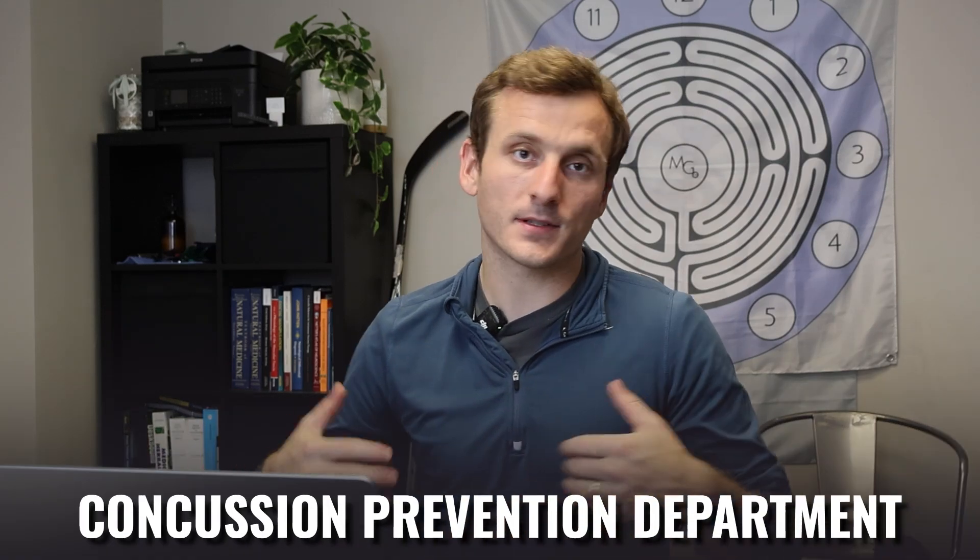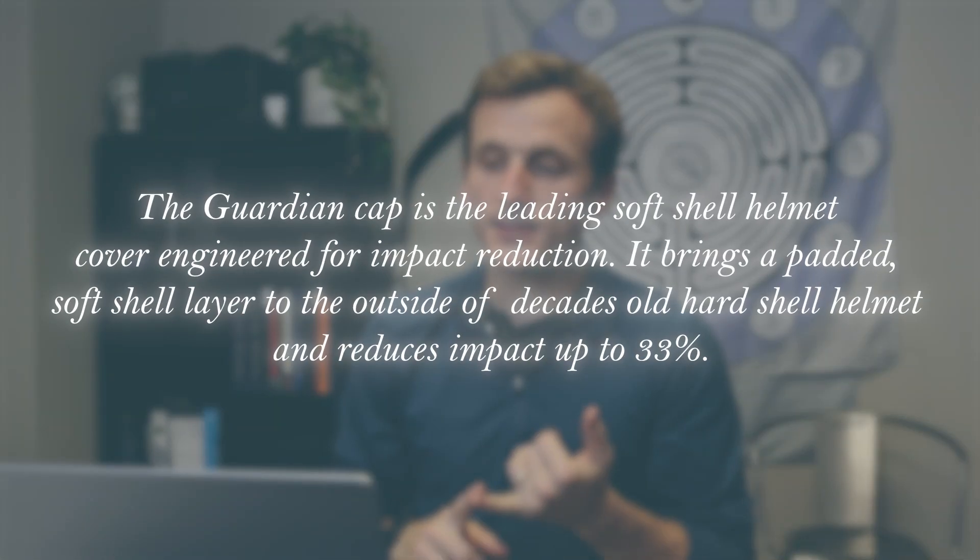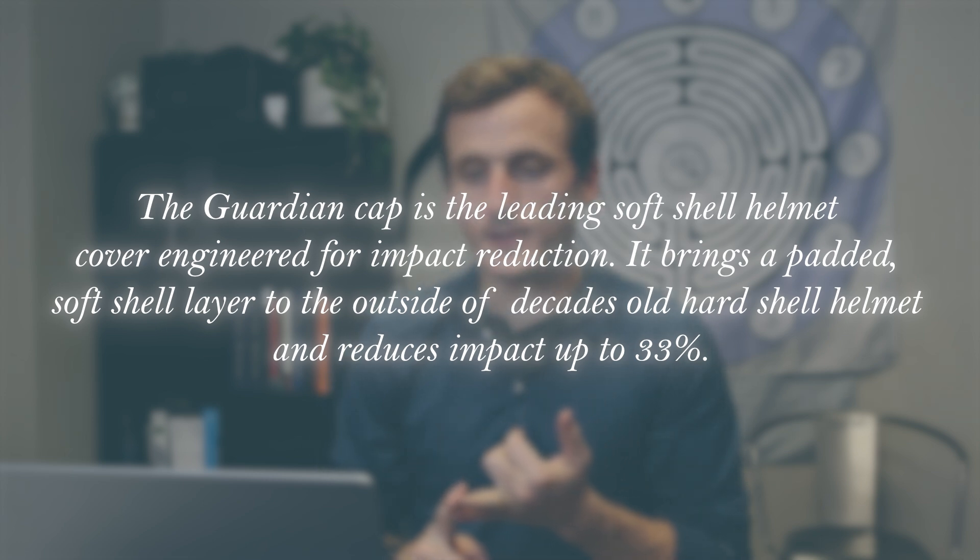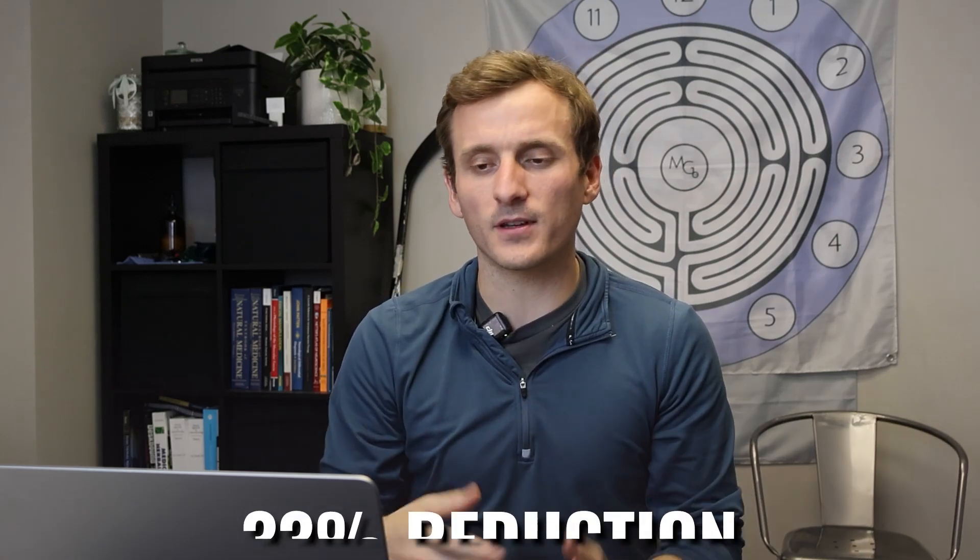So, with that, we know that helmets could obviously use some work in the concussion prevention department. Enter guardian caps. These were created in 2020, and from their website, they say, quote, the guardian cap is the leading soft shell helmet cover engineered for impact reduction. It brings a padded soft shell layer to the outside of decades-old hard shell helmet and reduces impact up to 33%. They claim it to tap into physics of let's reduce force one layer at a time. We've got the soft shell, we've got the helmet, we've got the skull, and by reducing the force on the brain, we're going to reduce impact damage and possibly reduce concussion, which is a great claim and a great idea. So, how does that translate out into the real world gameplay? And honestly, where does that 33% number come from, that 33% reduction?